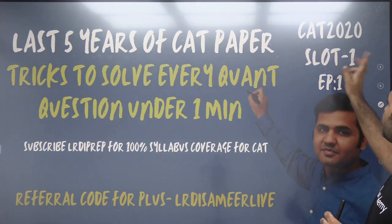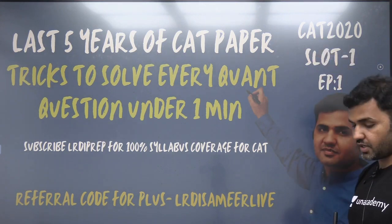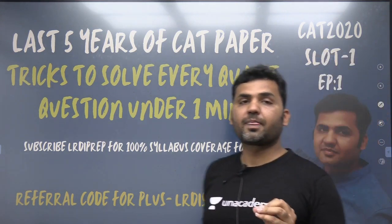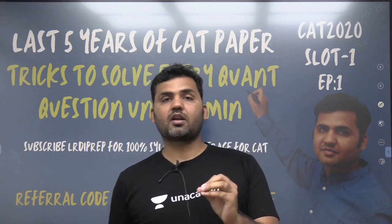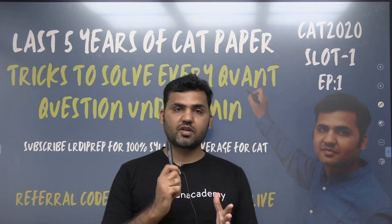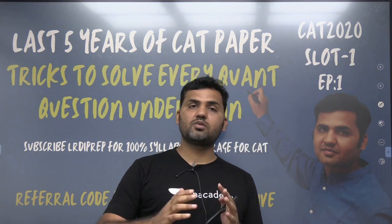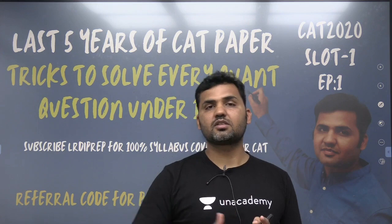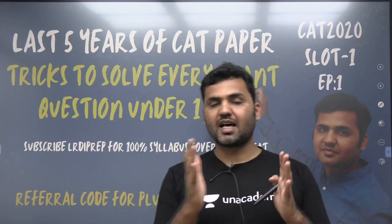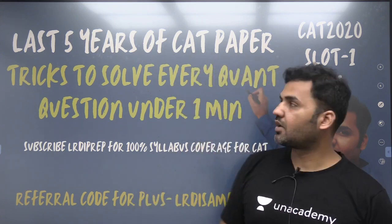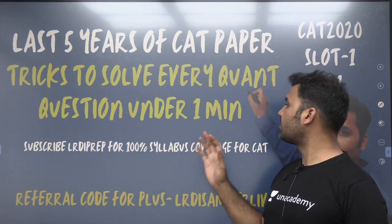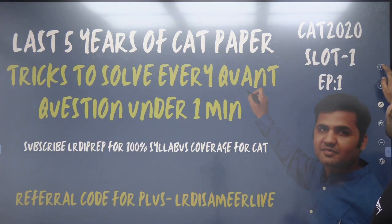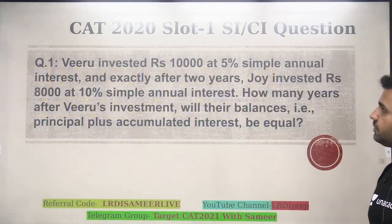Let's have a look at the first question. I'll be starting from CAT 2020 Slot 1, Episode 1. For every slot, I'll be discussing questions of 2020 Slot 1, 2, 3, then 2019 Slot 1, 2, and 2018 Slot 1, 2. The last five years of quantitative aptitude questions will be covered under this whole series.